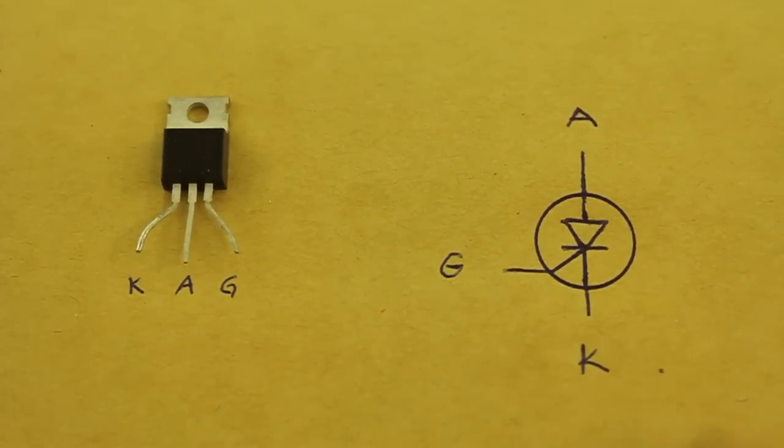In order for the thyristor to turn off, we must stop the flow of current that passes through it.